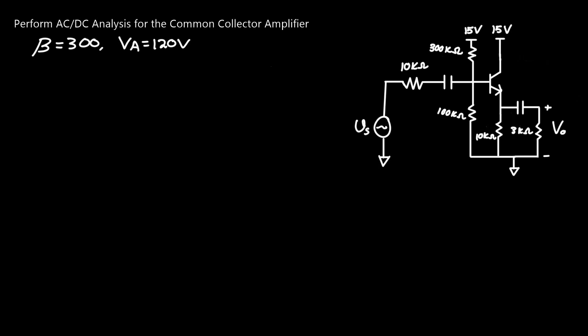Perform AC-DC analysis for the common collector amplifier. Beta equals 300, and early voltage VA equals 120 volts. If you need more examples on how this general process works for simpler single transistor amplifiers, I highly suggest you visit my previous video, which covers the general process and is a little simpler to understand than this configuration.